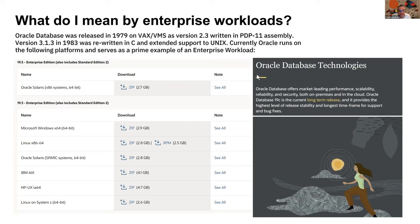The Oracle database was first released in 1979 — I believe even before IBM's first relational database, even though it used IBM research to build it. It was written in assembly on a VAX, which is of course a very alternate platform that is no longer with us. I'll focus on platforms that are still available, and I just went to the Oracle download site to check the latest downloads.